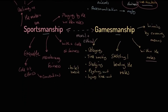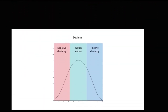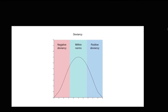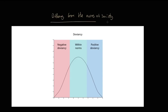Let me be clear: deviancy is absolutely not gamesmanship. Deviancy is something which is differing from the norms of society - that is our definition of deviancy. I want to introduce you to really three types of deviancy. I'll come to the third one in a moment. The first is what we call negative deviancy, and often when we talk about deviancy, this is the one we tend to look at.